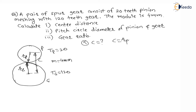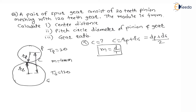Therefore, C is equal to the radius of pinion plus radius of gear, which is nothing but the diameter of pinion plus diameter of gear divided by 2. We know that module is equal to diameter divided by number of teeth, therefore diameter is equal to module × T.